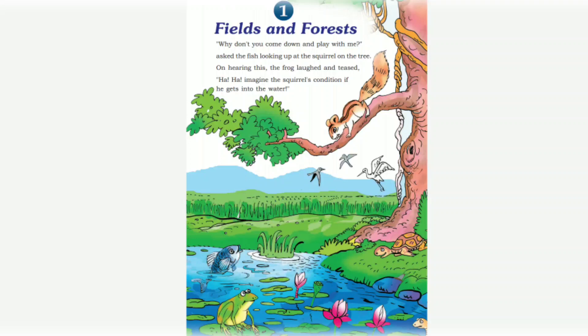From this paragraph we can understand that all organisms have their own speciality and their own physical characters. For example, squirrels can climb a tree and jump along its branches, but fishes cannot. Fishes can dive and turn in water very well. Each and every organism on earth has their own features and physical characters.